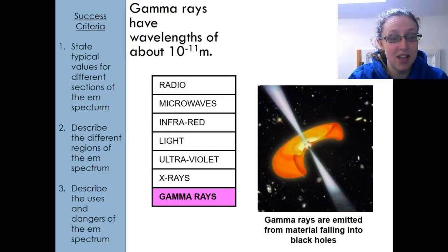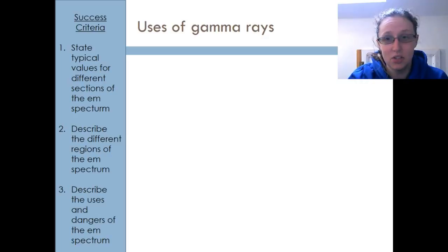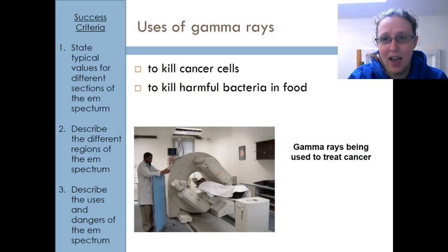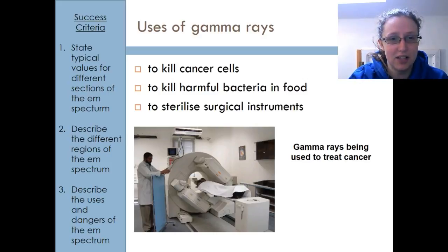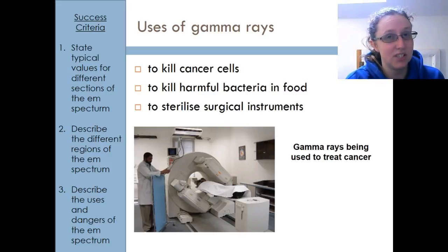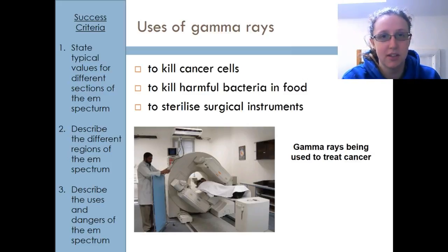Next up, gamma rays. They have a wavelength of about 10 to the minus 11 meters. Uses of gamma rays include killing cancer cells — though they can also cause cancer, one of those little ironies of life — killing harmful bacteria in food, sterilizing surgical instruments, and astronomy. Basically, everything in the universe gives off EM waves, so by detecting them we can study objects in the universe. That's why astronomy appears on every single one of these lists.